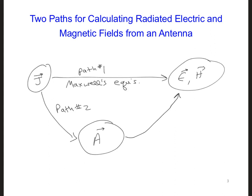Note that the vector magnetic potential, this A right here, is a human construct. It's not physical, meaning that we can't go out and measure a vector magnetic potential. Instead, we're only going to use this here to simplify the calculations for us to get from J here over to E and H.